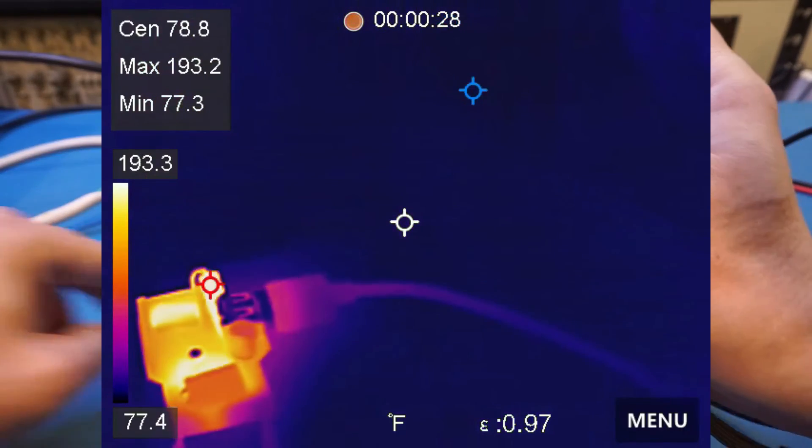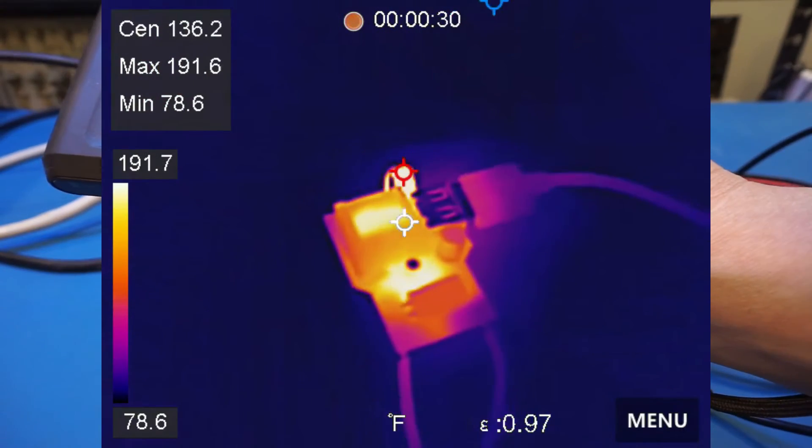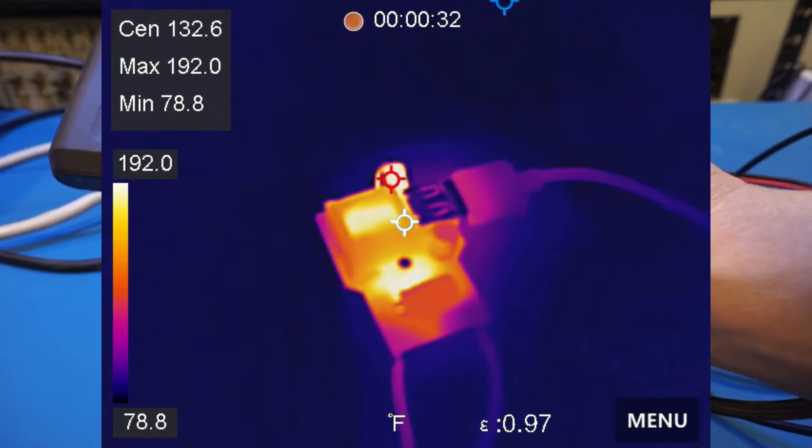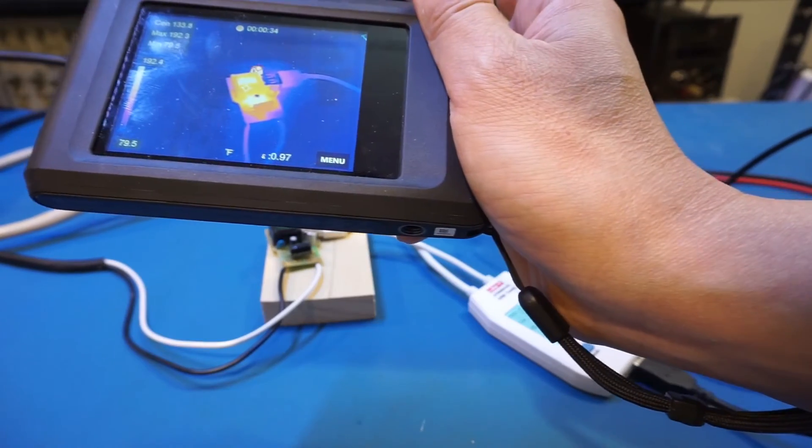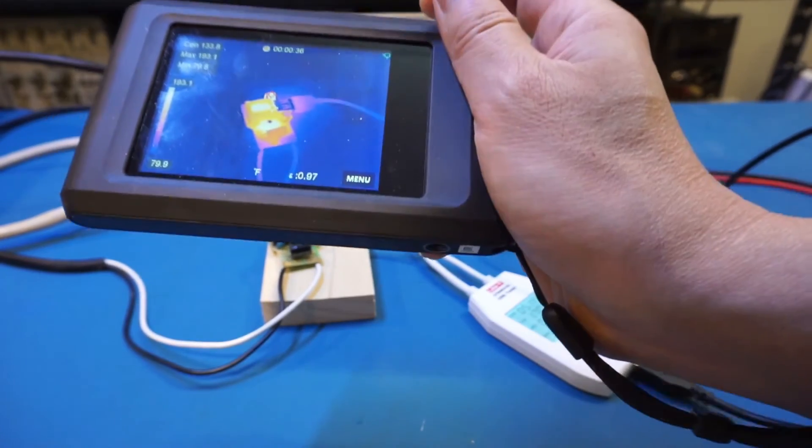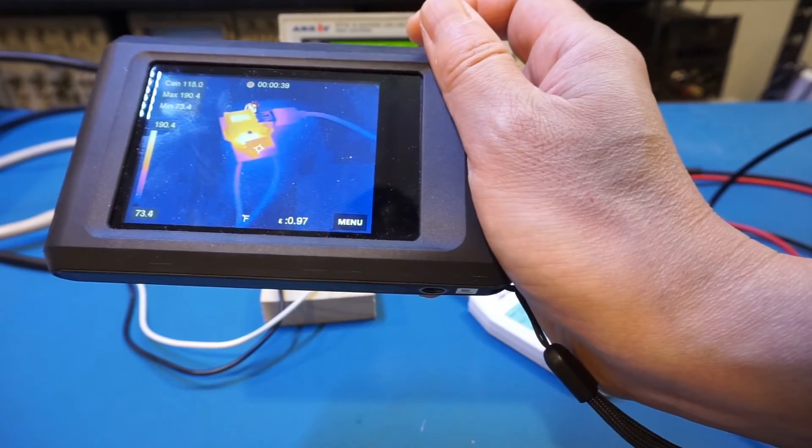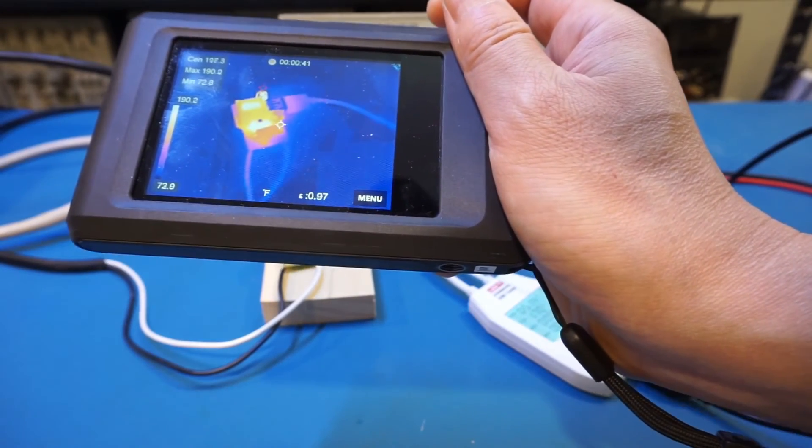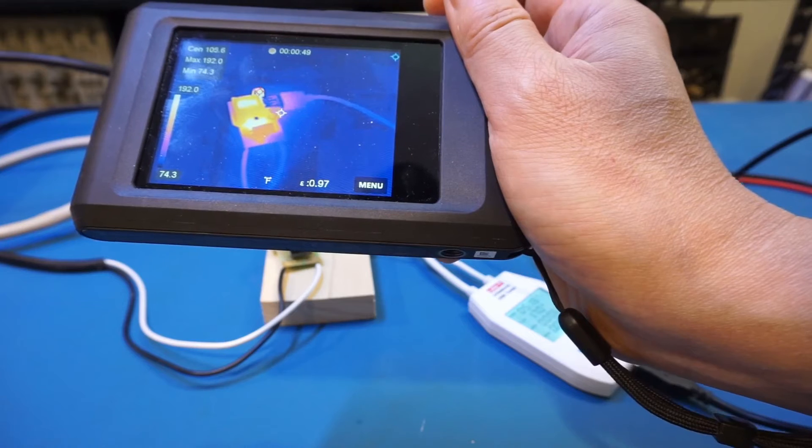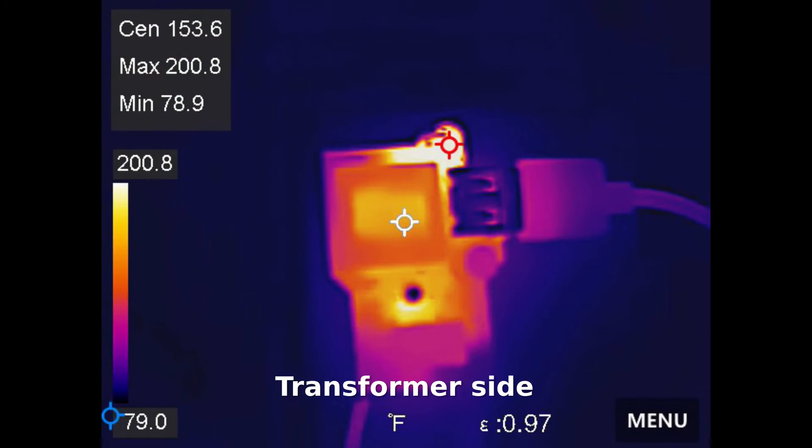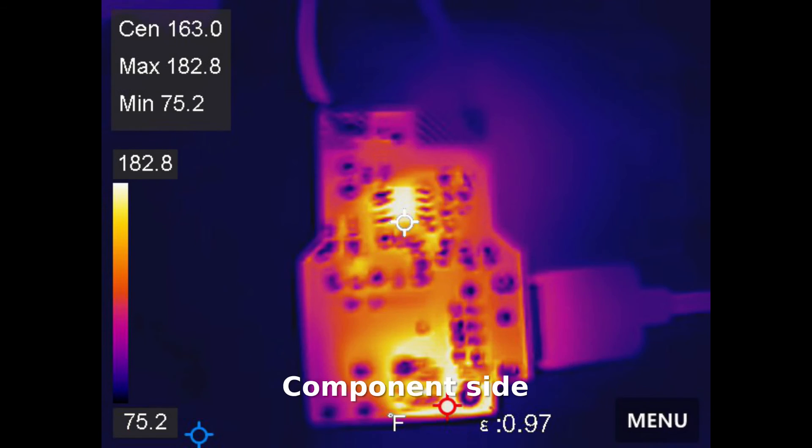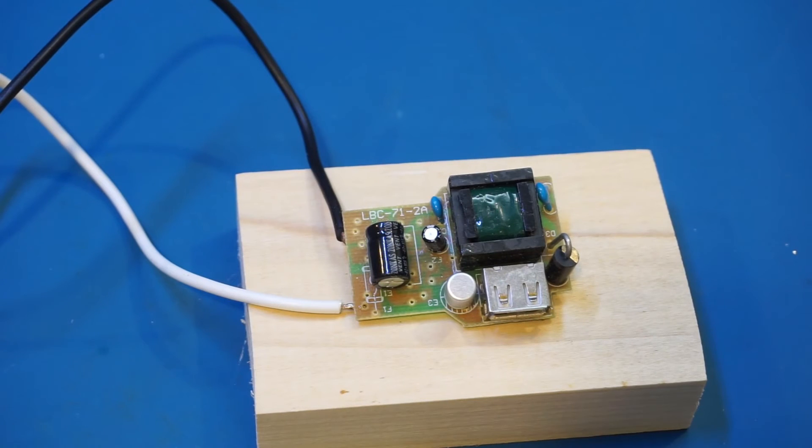And certainly, that is going to be even hotter if you enclose it in that enclosure. So clearly, this is not designed to be able to sustain this kind of output current. Right now, we're just at 1.7 amps. And it's already this hot. So we can see the power rating is nowhere near the maximum rated 2 amps.